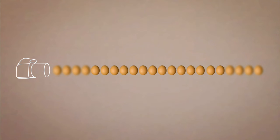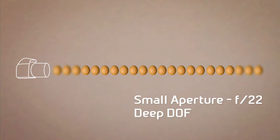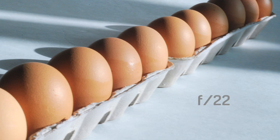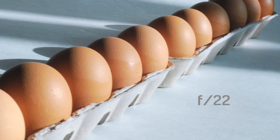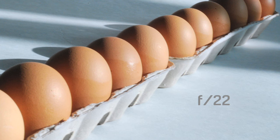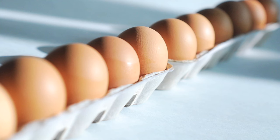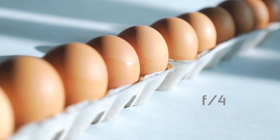But if you want most of the eggs to be in focus, you'd have to use a small aperture such as f22 to achieve a much greater depth of field. So just remember: the more things you want in focus, the higher the f number you choose. The fewer things you want in focus, the smaller f number you choose.